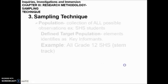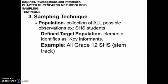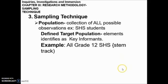Now let us discuss sampling technique. In sampling technique, we have what is called a population — the collection of all possible observations. For example, the population can be all senior high students. From this population, we identify the defined target population, which refers to the elements identified as key informants. For example, all Grade 12 senior high students with STEM track would be a defined target population.